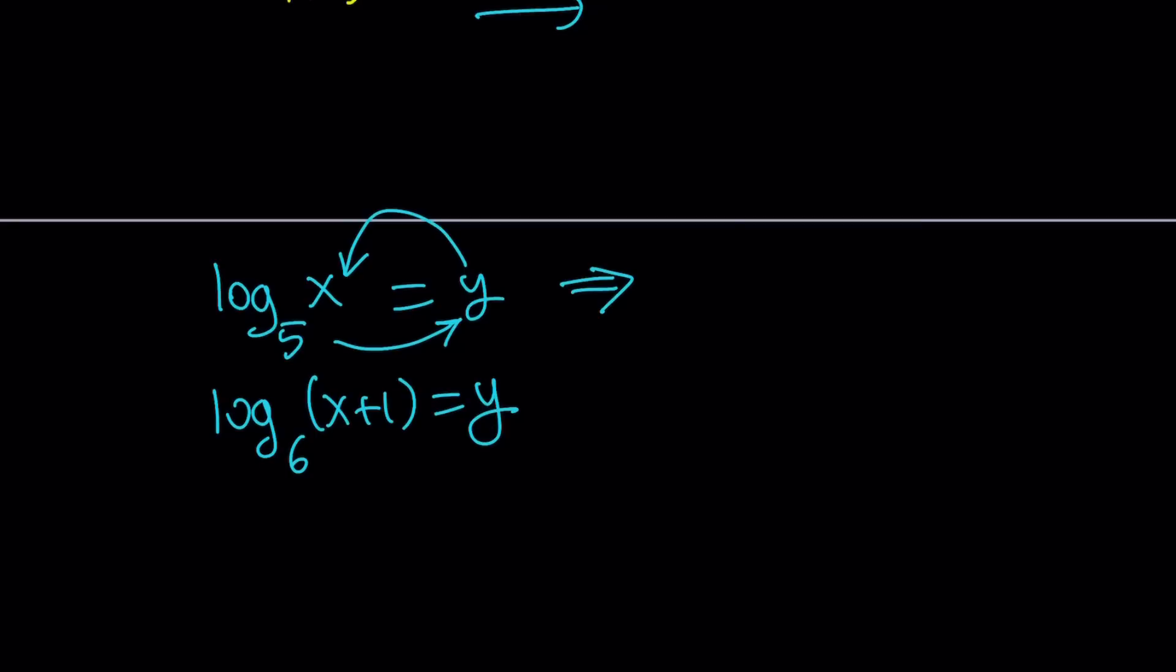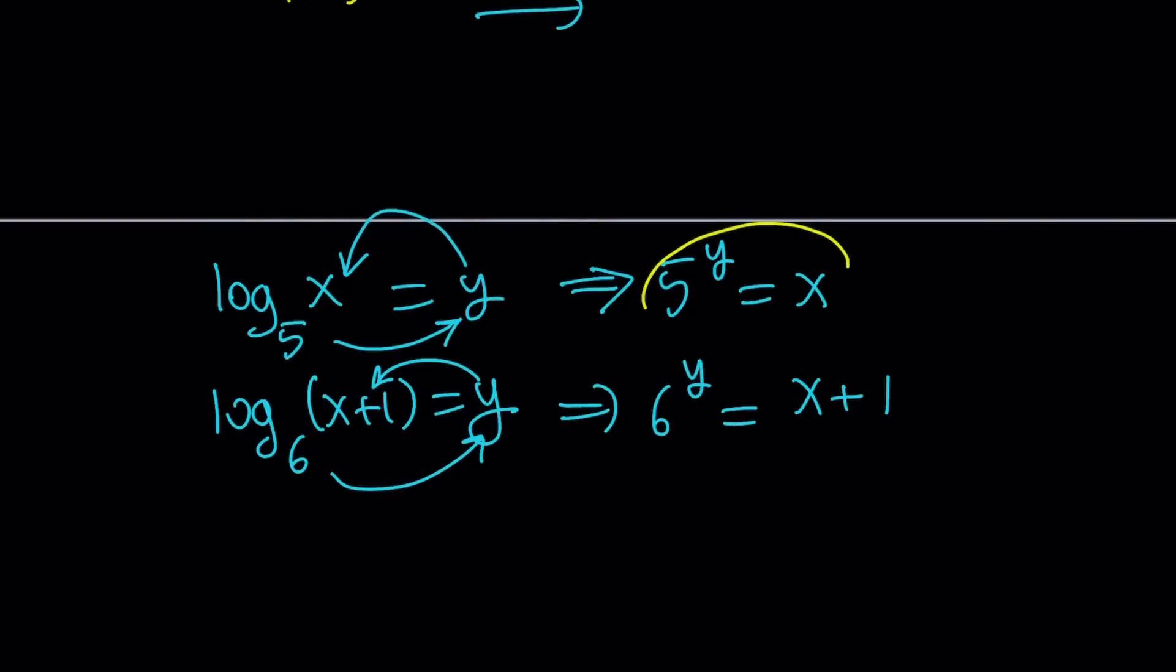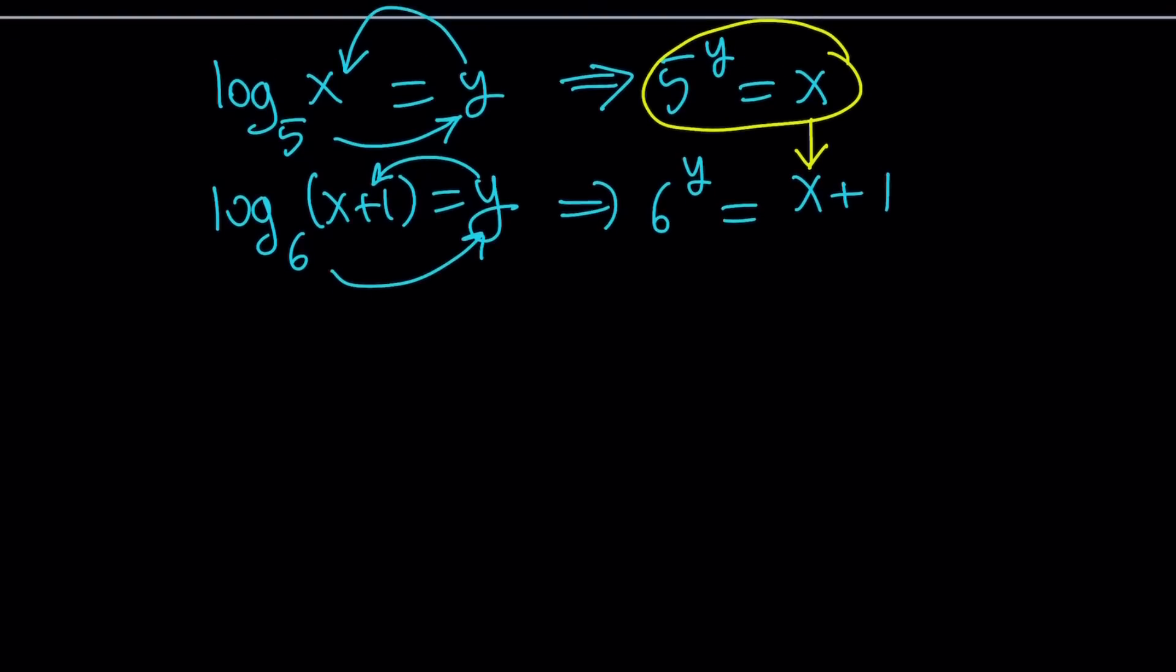From here, we can use the definition of logs or do 5 to the power of both sides. I like the definition, kind of going across the equal sign and coming back at x. That's how logs work. So 5 to the power of y equals x. Same idea, 6 to the power of y equals x plus 1. We still got a system with two variables and two equations, but we can do substitution now. Because x is the same as 5 to the y, so I can go ahead and plug it in.